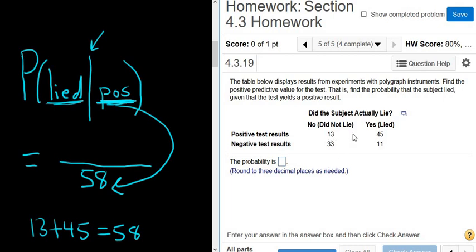And from these, we're looking for the liars, right? So 45. So 45 over 58.